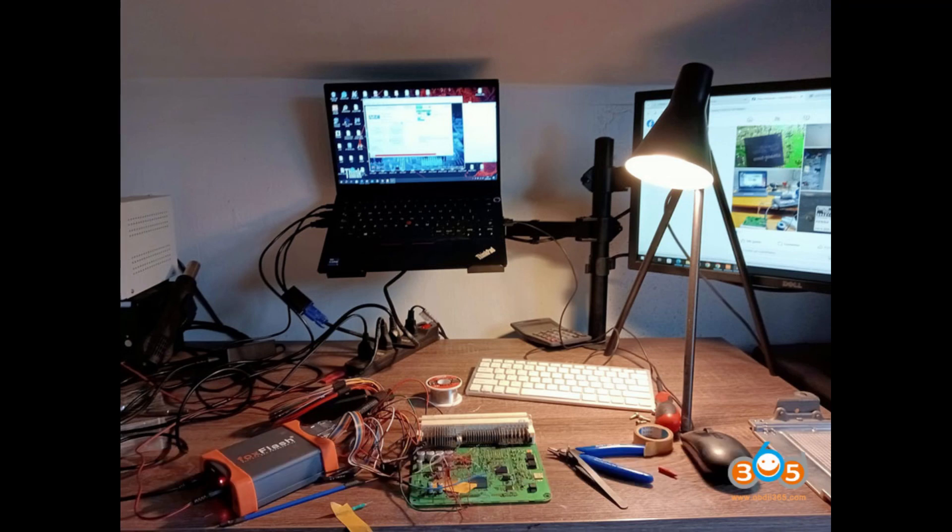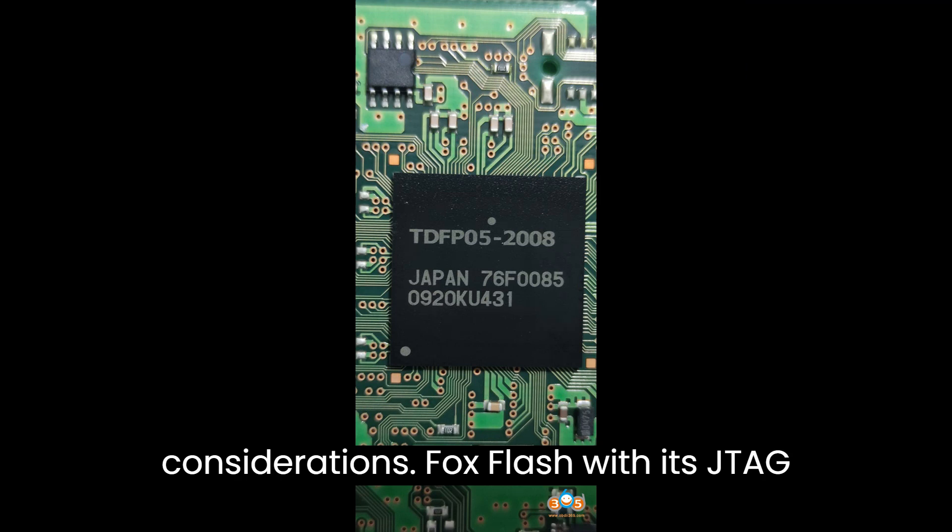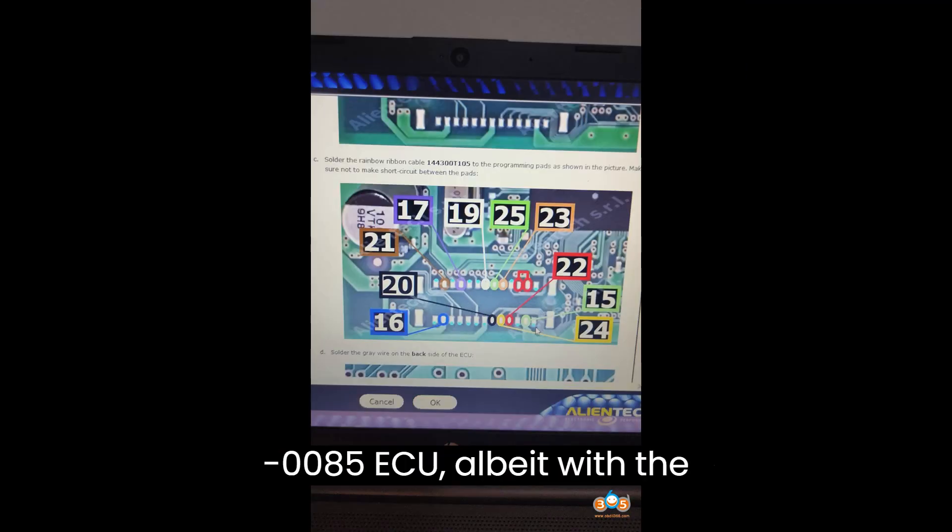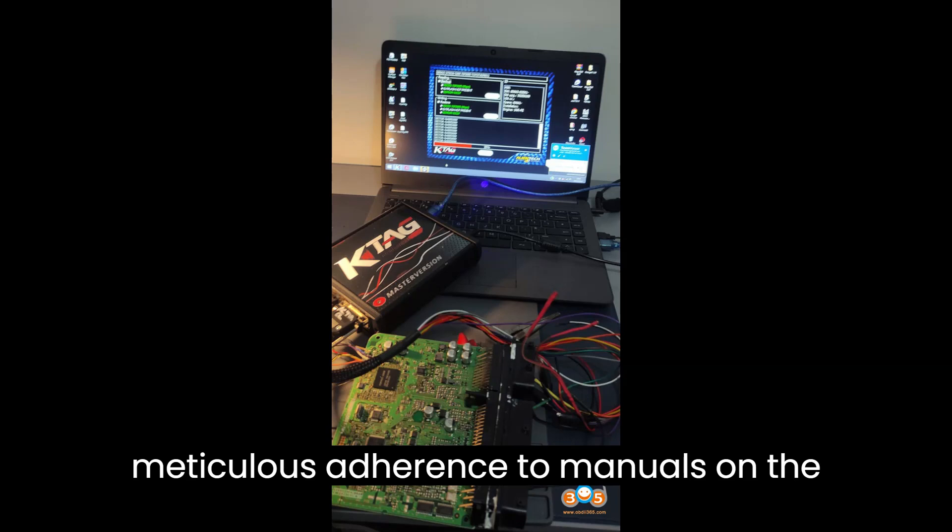Comparing the options available, each tool offers distinct advantages and considerations. FoxFlash, with its JTAG mode capability, provides a reliable method for reading the Denso 76F0085 ECU, albeit with the requirement for a 24V power supply and meticulous adherence to manuals.